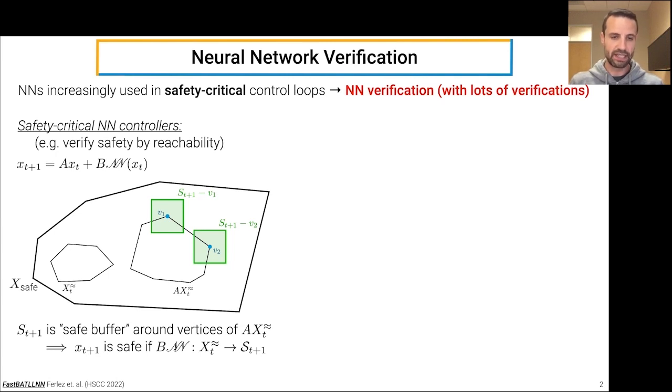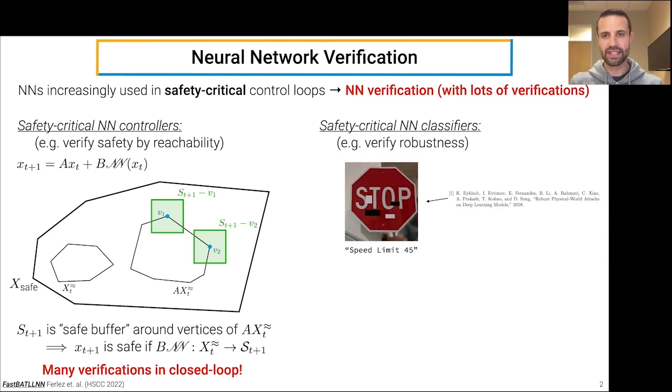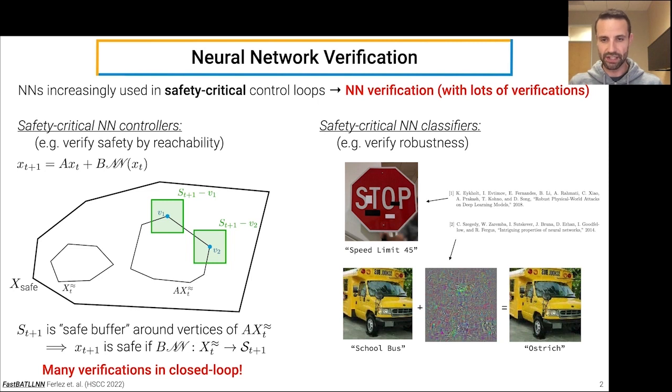Of course, this will have to be done across multiple times, so many verifications are required in closed loop. Another example where many static neural network verifications are required is in verifying the robustness of safety-critical neural network classifiers. There are many known examples of non-robust classifiers creating safety problems. The important point here is that verifications are usually done to verify robustness around each of the data points on which the network is trained, of which there are usually quite a few. So again, many verifications required.